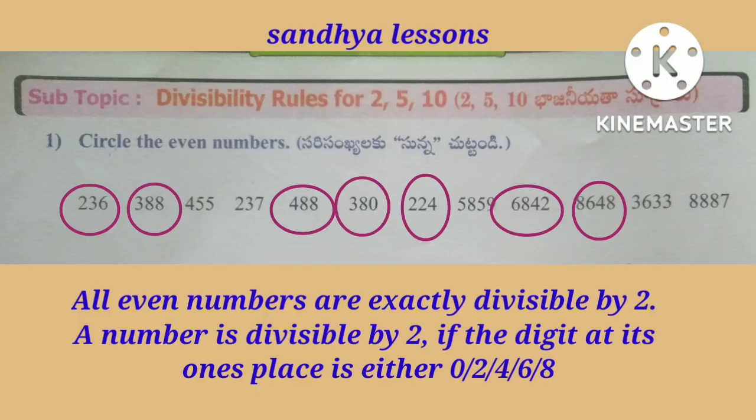Let us circle the even numbers from the given numbers. Even numbers are 236, 388, 488, 380, 224, 6842, and 8648.